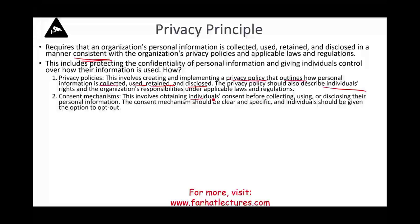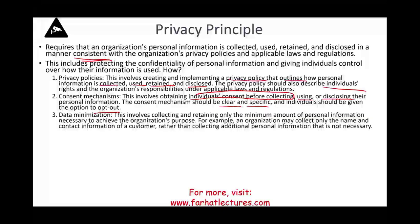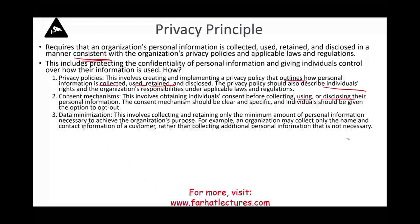Consent mechanisms involve obtaining individuals' consent before collecting, using, and disclosing their information. In the US, individuals can opt out of having information collected by a website; in Europe, you must opt in — stricter rules apply. Consent mechanisms should be clear and specific, giving individuals the option to opt out. Data minimization involves collecting and retaining only the minimum amount of personal information needed to achieve the organization's purpose — don't collect more than necessary. For example, you may need a name and contact information but not necessarily a social security number or email.